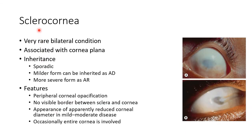Now let us discuss about sclerocornea. It is a very rare bilateral condition associated with cornea plana. The inheritance is usually sporadic; however, one mild form can be inherited as autosomal dominant and another more severe form as autosomal recessive. There will be peripheral corneal opacification with no visible border between sclera and cornea, as seen in this picture. This gives the appearance of apparently reduced corneal diameter in mild to moderate disease. Occasionally in severe cases the entire cornea is involved, as seen in this picture.